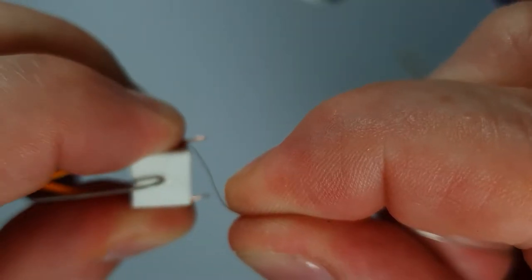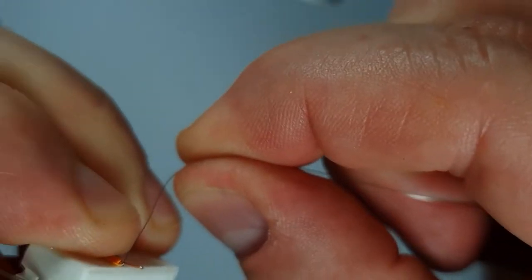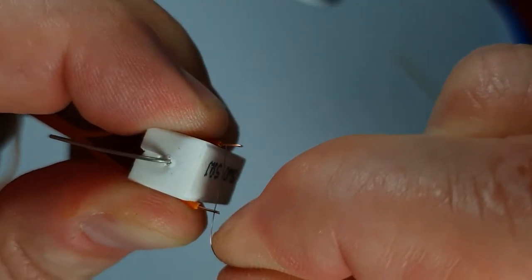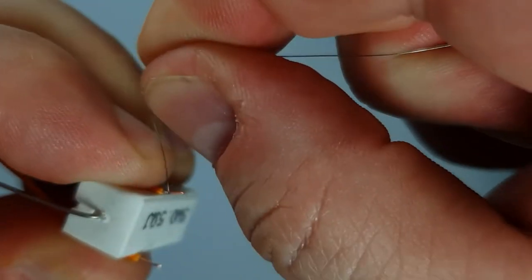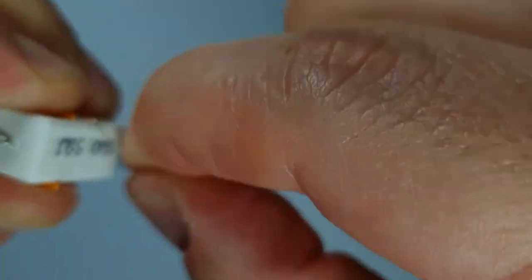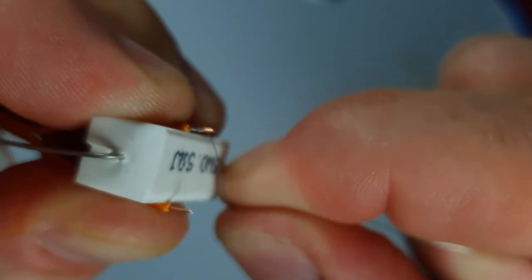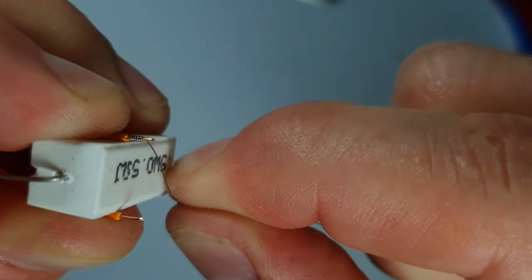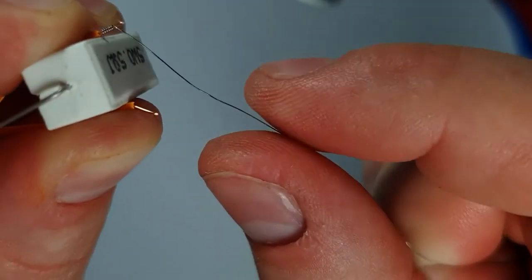I'm just going to twist it around these bare copper wires. I'm using this power resistor just to have good spacing in between. It can be a piece of wood, whatever. It will be removed anyways.